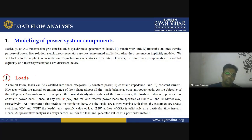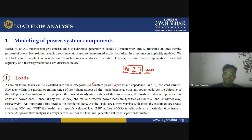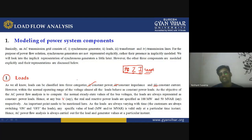First let us consider the load. As we all know, the load can be categorized into three categories: constant power (PQ model), constant impedance (Z model), and constant current (I model). These are the three models or categories of loads. However, within the normal operating range of voltages, almost all loads behave as a constant power load. As the objective of AC power flow analysis is to compute the normal steady-state values of bus voltages, loads are always represented as constant power loads.